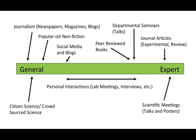Starting on the general end of the spectrum: journalism, popular nonfiction, citizen science, crowdsource science, social media, and blogs tend to be geared towards a general audience, and might be a good place to get started. Moving towards the expert end of the spectrum, you get into peer-reviewed books, departmental talks, journal articles, and scientific meetings. Those are geared more towards an expert audience where scientists are talking to other scientists — more technical, with more jargon.